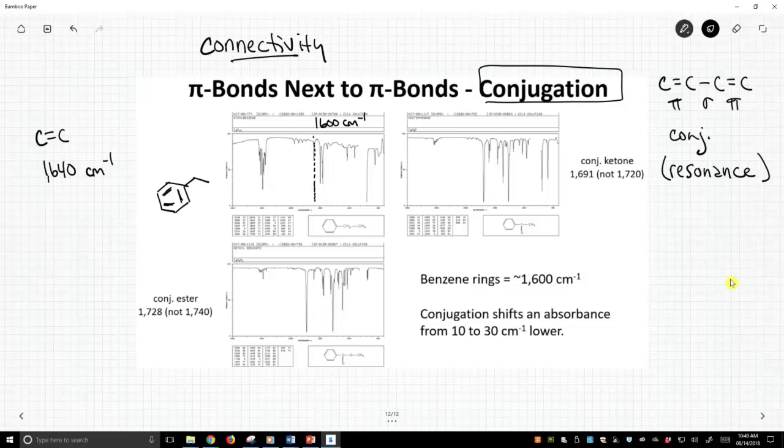That occurs because we have, in this ethyl benzene, the benzene ring - we have a double bond, then a single bond, then a pi bond, and a single bond, and a pi bond, and a single bond. We have conjugation.